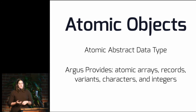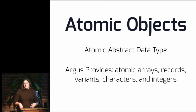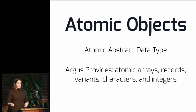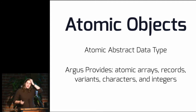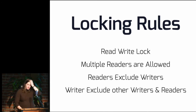The way Argus implements this atomicity is by defining atomic objects — an atomic abstract data type. Argus provides some out of the box, but it's also an abstract data type so you can implement your own. It provides things like arrays, records, characters, integers — any kind of scalar type you can make atomic very easily in Argus. Guardians can use these atomic objects within their state; anything accessed concurrently that you want strong consistency guarantees on, you make atomic. You can also have normal objects, because Liskov is very practical and notes the performance cost of synchronization is high — you don't want to do it on everything, just when you need to. The locking rules are simple read-write locks: multiple readers are allowed, readers exclude writers, writers exclude other writers and readers.